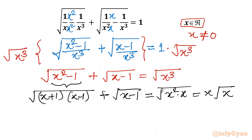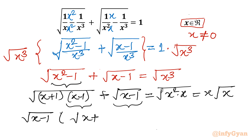Now on the left hand side you can see there is square root of (x − 1) in both terms. Take square root of (x − 1) as common factor. So in brackets we write square root of (x + 1) plus 1, all equal to x root x.